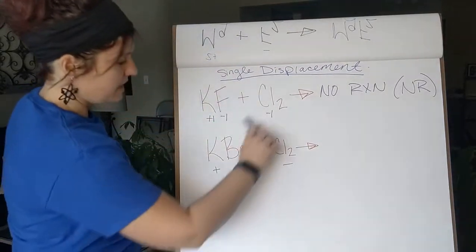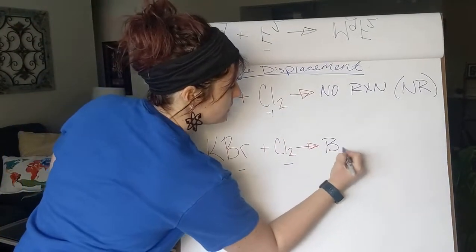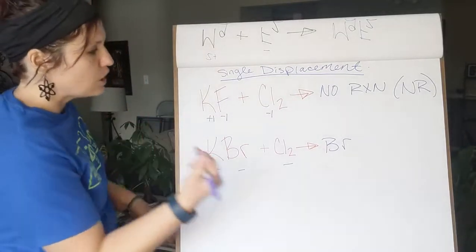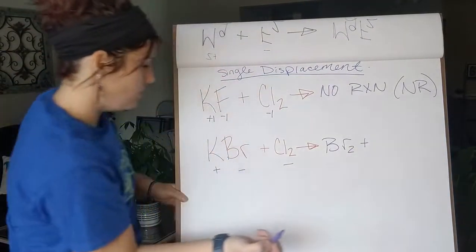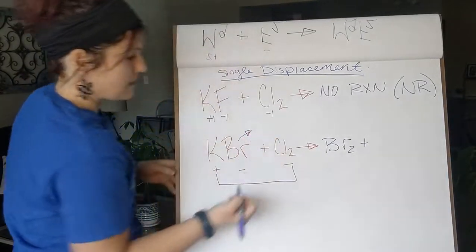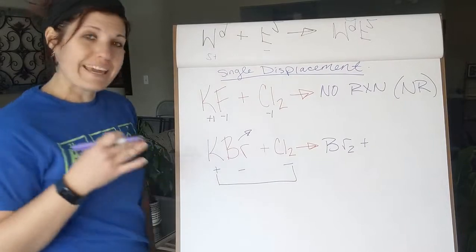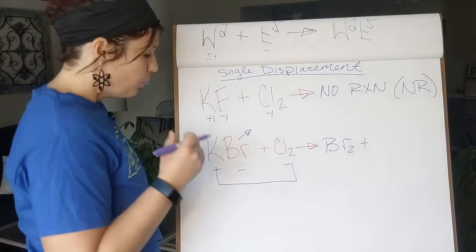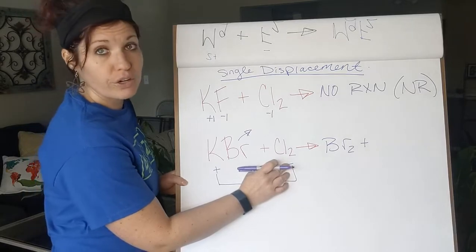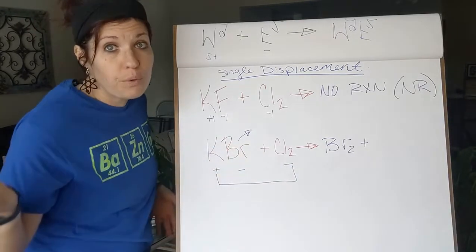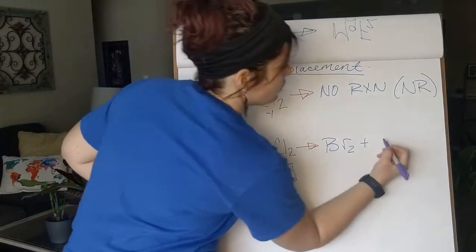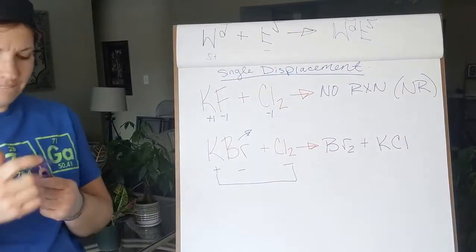One of our products is bromine. Since it's an individual element, we ask if it's diatomic — it is, so it gets a subscript two: Br₂. Then potassium comes together with chlorine to form potassium chloride. We can't carry over subscripts; we build the formula from charges. Potassium is plus one, chlorine is negative one, so they cancel in a one-to-one ratio. The compound is simply KCl.